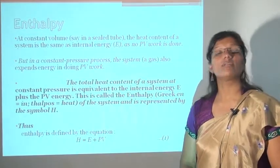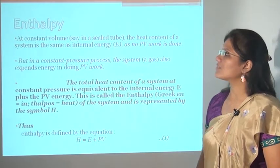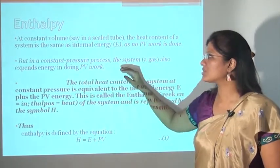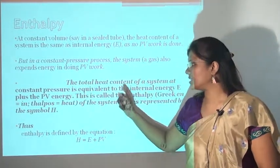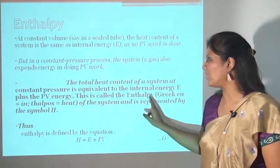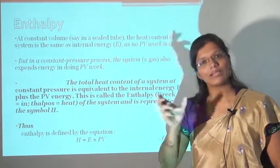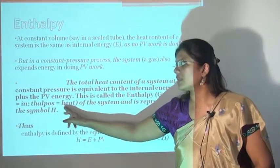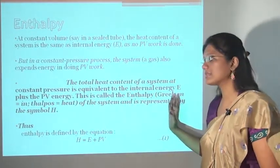Now some terms we need to know in thermodynamics. First is enthalpy. At constant volume, the heat content of the system is the same as its internal energy as no PV work is done. But in a constant pressure process, the system also expands energy in doing PV work. The total heat content of a system at constant pressure is equivalent to the internal energy E plus the PV energy — this is called enthalpy. The word enthalpy comes from the Greek word 'en' meaning 'in' and 'thalpas' meaning 'heat.' Enthalpy is represented by the symbol H.